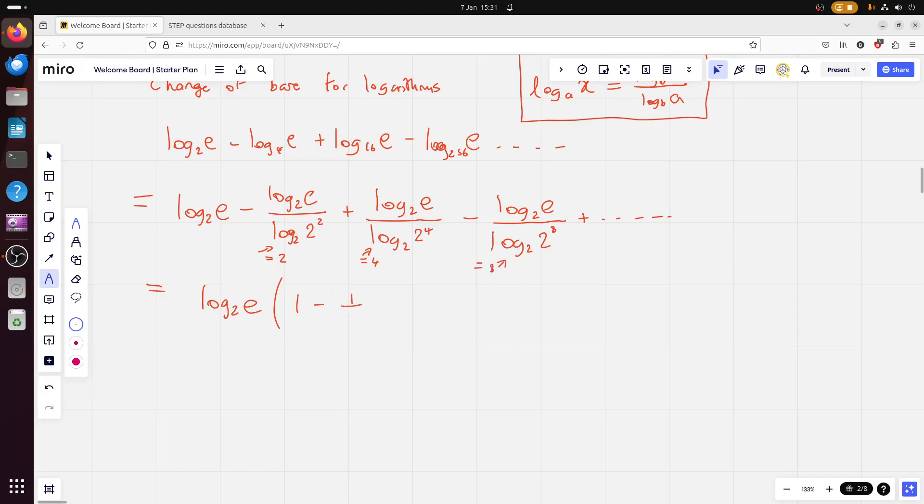I've got a log base 2 of E in everything, so I'll factorise it out. And then look what I've got. I've got 1 minus a half plus a quarter minus an eighth. They do love putting in little sneaky GP sums of infinite sequences. This is a GP. A is 1, R is minus a half. And so we need the sum to infinity formula of A over 1 minus R, which is going to come to 2 thirds.